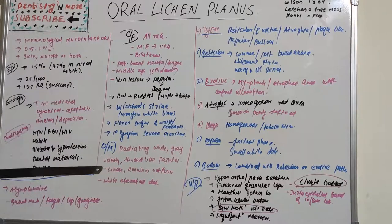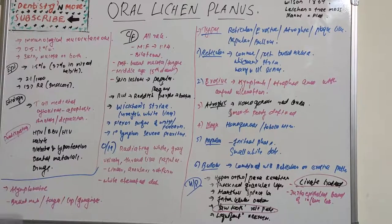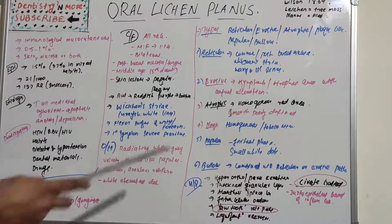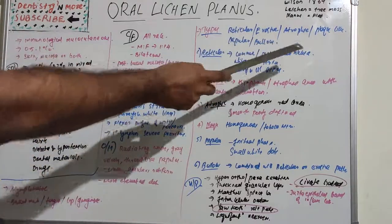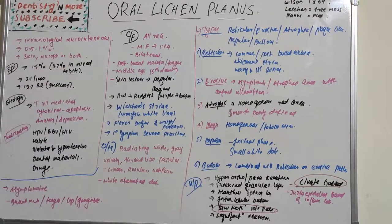Oral lichen planus can be seen mostly on the buccal mucosa, tongue, lip, gingiva, floor of the mouth, and palate. It may appear weeks or months before the appearance of cutaneous lesions. Based on clinical presentation, there are six types: reticular, erosive, atrophic, plaque-like, papular, and bullous oral lichen planus.